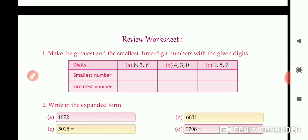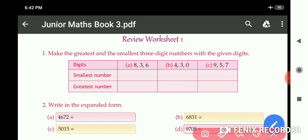Question number one: Make the greatest and the smallest three-digit numbers with the given digits. So how to do this question? Part A: 8, 3, 6. The smallest number is 3, 6, 8 and the greatest number is 8, 6, 3.